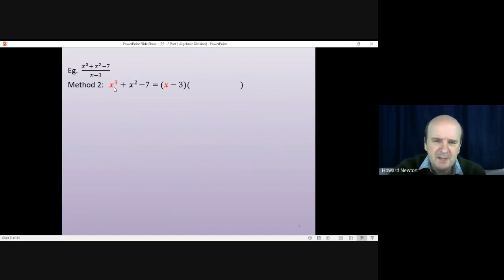You begin with the highest power of x, the x cubed in this case, and say well how will I get that? x times by what would give me x cubed? Well x times by x squared gives me x cubed, which is what I wanted. It doesn't just give me that. I also get minus 3 times x squared, so I also get minus 3 x squared.